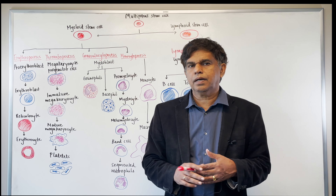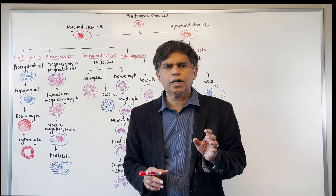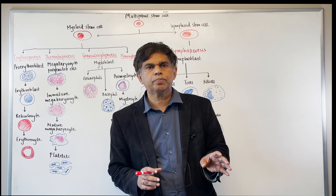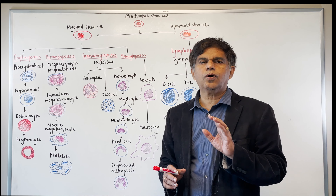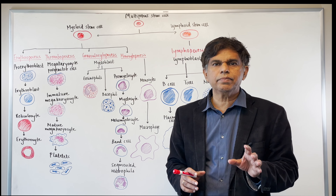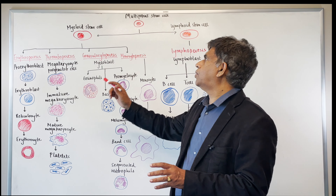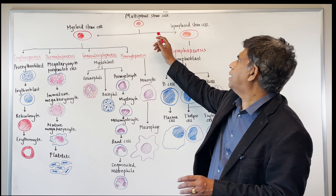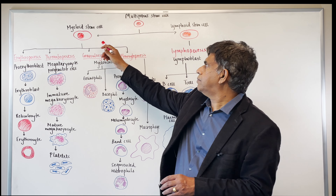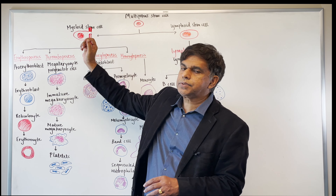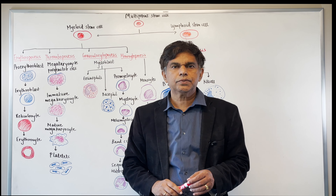We're going to be doing a series of lectures on hematology, starting with the basics today. We're going to go back to where it all begins — bone marrow. When you look at the bone marrow, you have the multipotent stem cell and two lineages: the myeloid stem cell and the lymphoid stem cell.